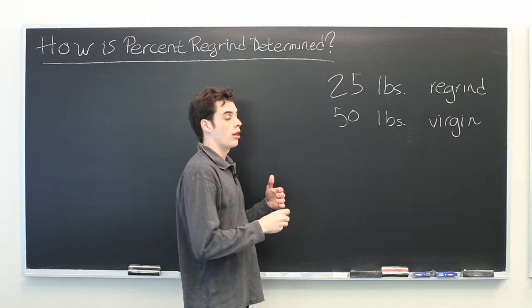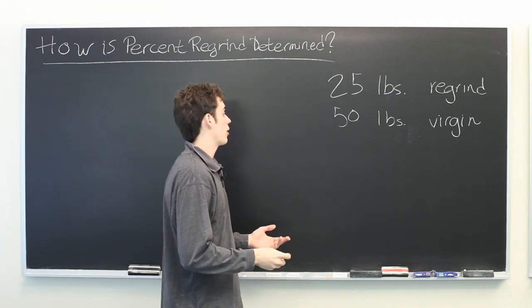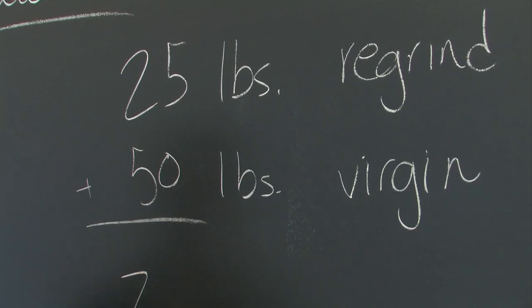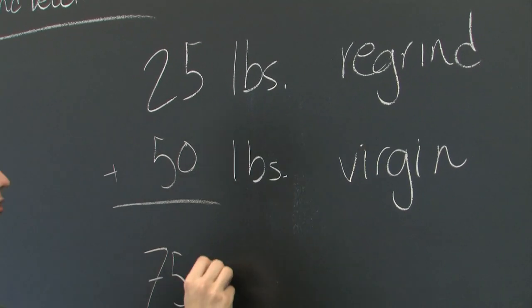In order to determine the percent regrind, we first need to calculate the total weight, which we get by simply adding these two quantities. We get 75 pounds.